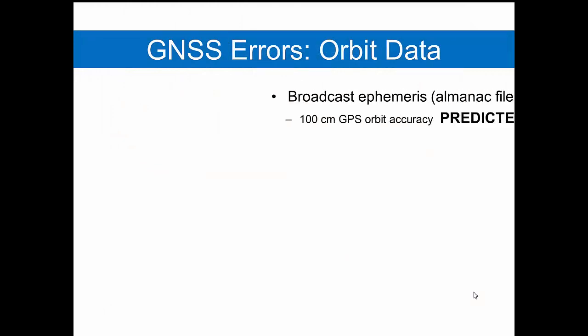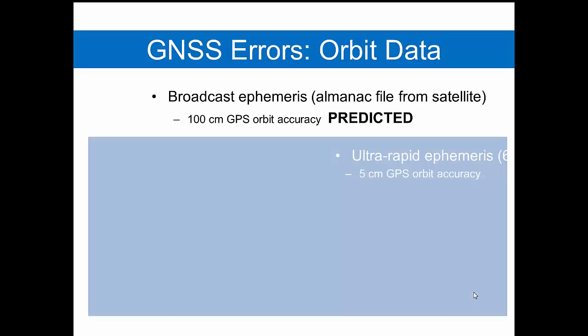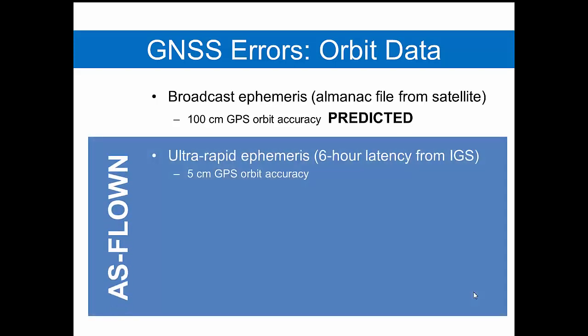The predicted orbits, also known by that term ephemeris, have an accuracy of about one meter. However, because of the physical forces experienced by the satellites, they drift from that. We need to track that so we can update those satellite orbital trajectories.